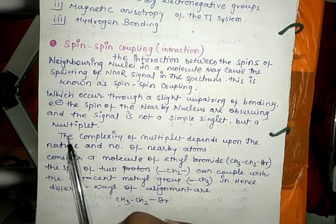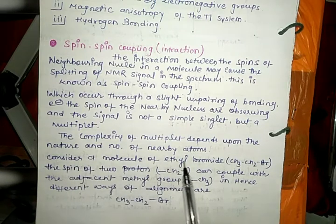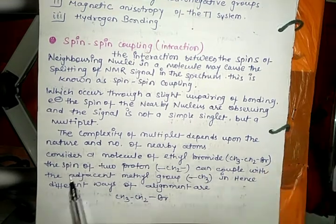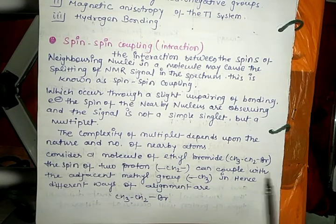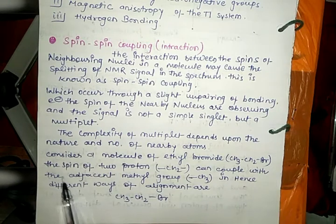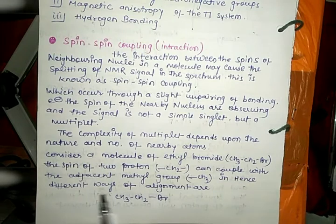The spin-spin of the NMR nucleus observed and the signal is not a simple singlet but a multiplet. The complexity of multiplet depends upon the nature and number of nearby atoms. Consider a molecule of ethyl bromide CH3-CH2-Br.